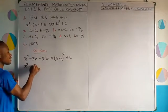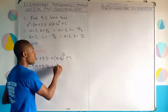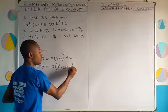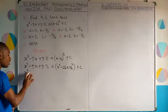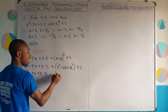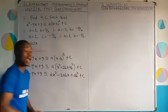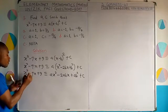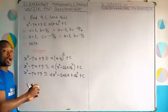Expanding: x² minus 7x plus 9 is equivalent to A times (x² minus 2Bx plus B²) plus C. Opening the bracket with A gives Ax² minus 2ABx plus AB² plus C.